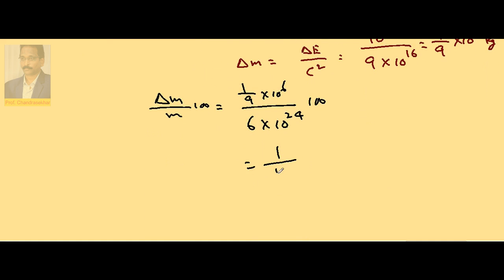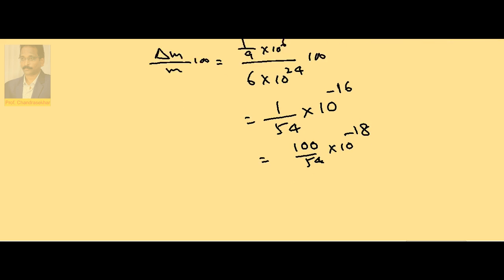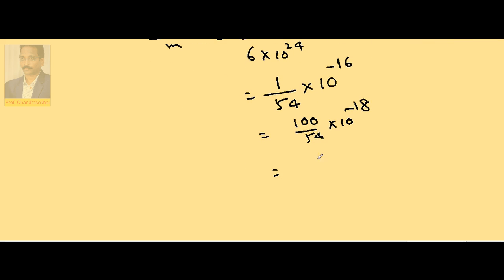1 by 9 into 6 is 54. Taking 10²⁴ to the numerator along with 10² gives 10 to the power of 8, and 8 minus 16 gives 10 to the power of minus 8. So we get 100 by 54 into 10 to the power of minus 18, which is approximately 1.8 into 10 to the power of minus 18.